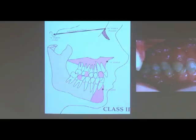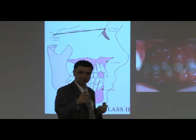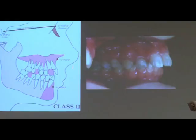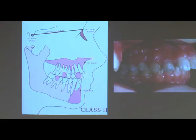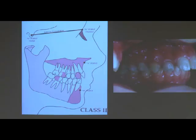That patient, as part of their class 2 correction, will require face mask therapy, which normally you reserve for a class 3 patient. If I draw that anterior arc and the maxilla is on that arc — A and S — but B point or Pogonion is well behind the anterior arc, that is a skeletal 2B.